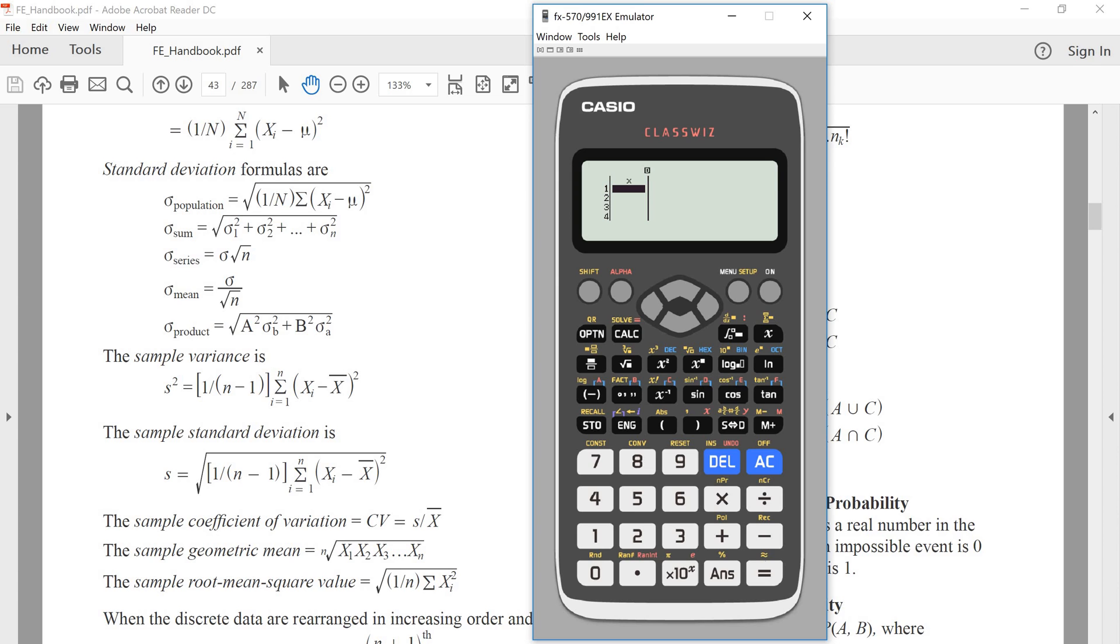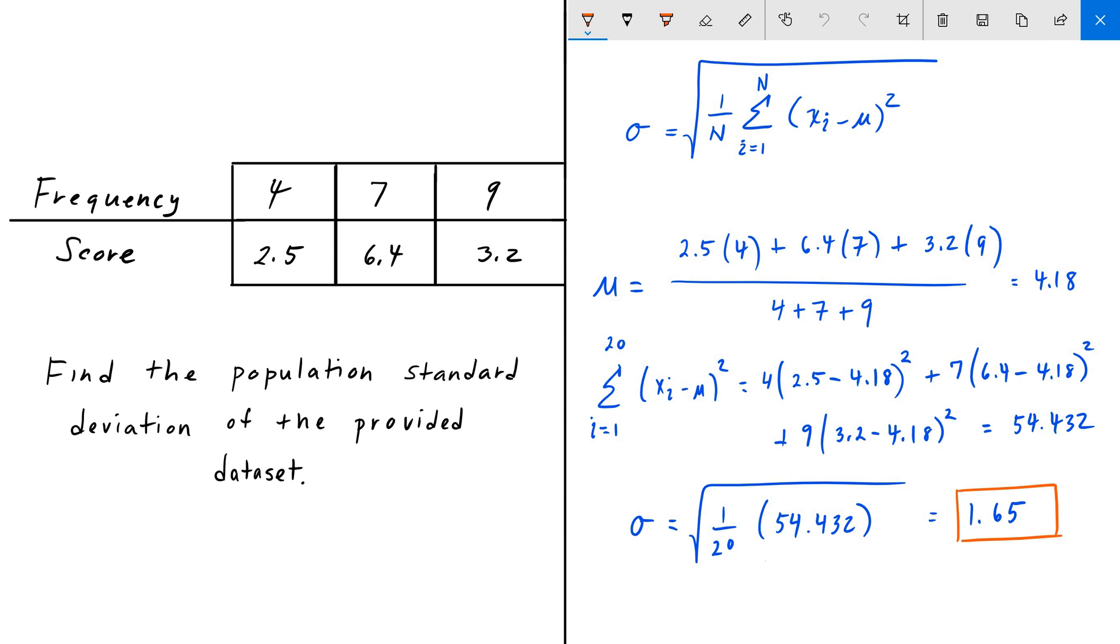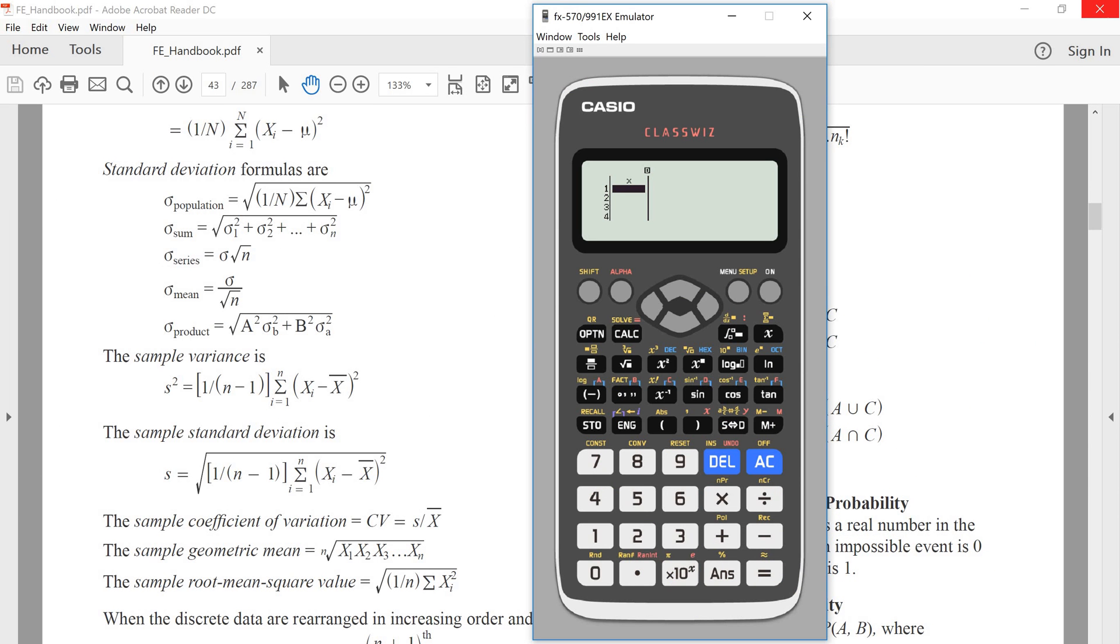Our data set was 2.5, 6.4, and 3.2. So we enter 2.5, and that occurred 4 times, so we enter that 4 times.